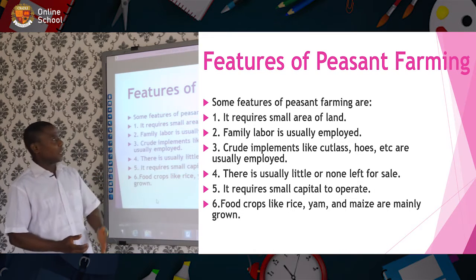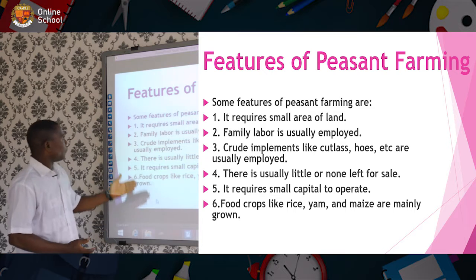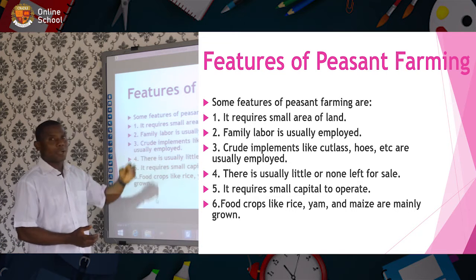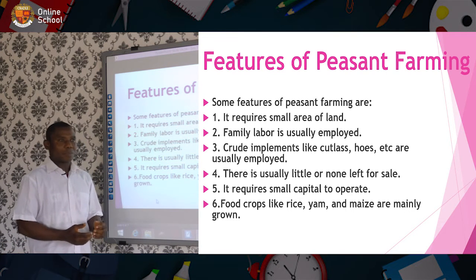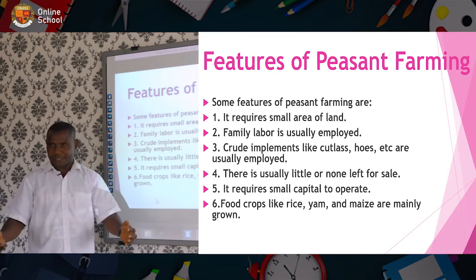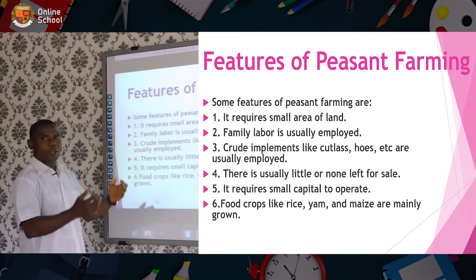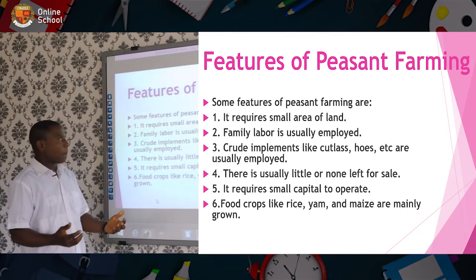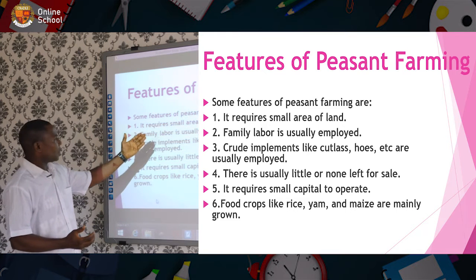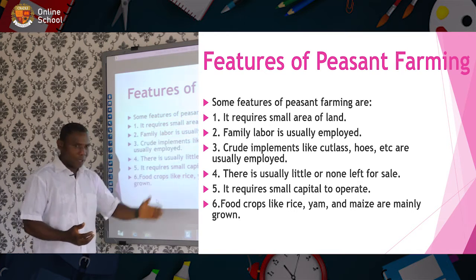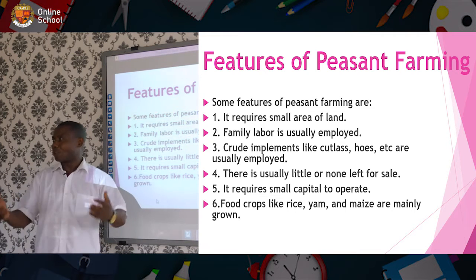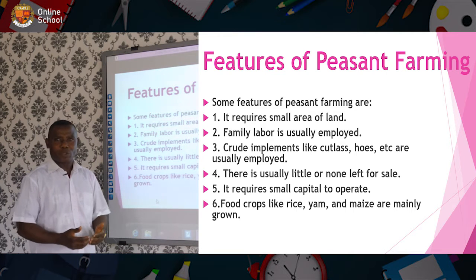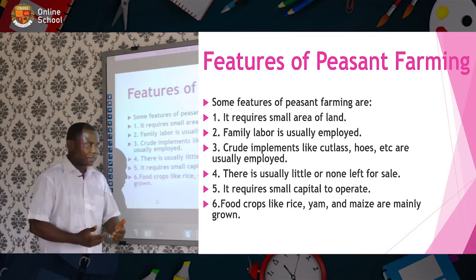Now let's look at the features of peasant farming. Number one, it requires a small area of land. You can just get a piece of land — you don't need much to cultivate crops for yourself and your family. Number two, family labor is usually employed. You just call your children, the wife, the husband — they can go to the farm and carry out the work. You don't need to employ outsiders.